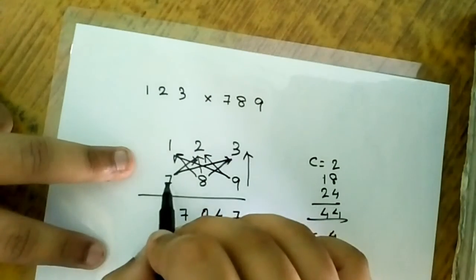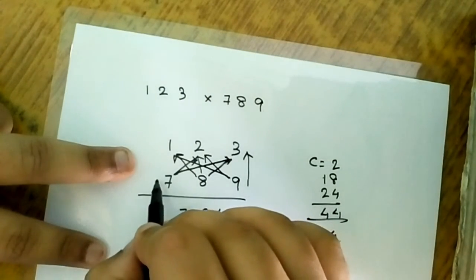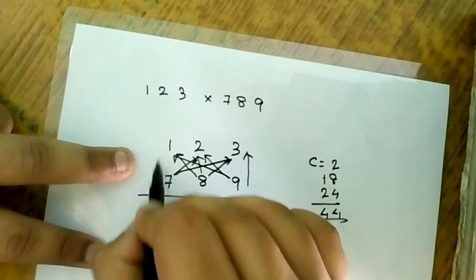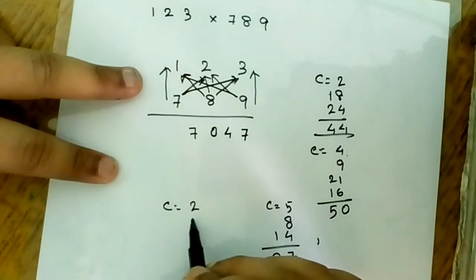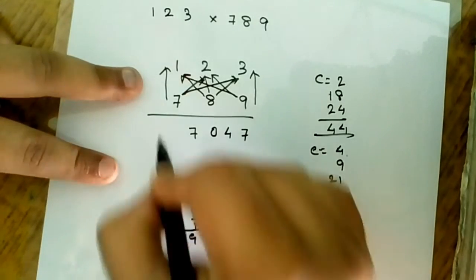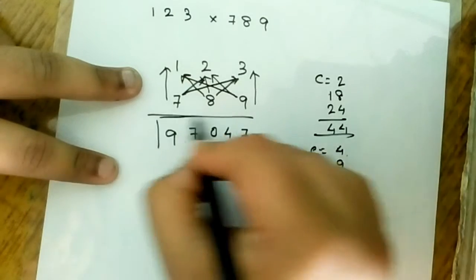The only number remaining is 7 and 1. You have to multiply down to up: 7 into 1 is 7, 7 plus 2 is 9. The answer is 97047. This is the required answer.